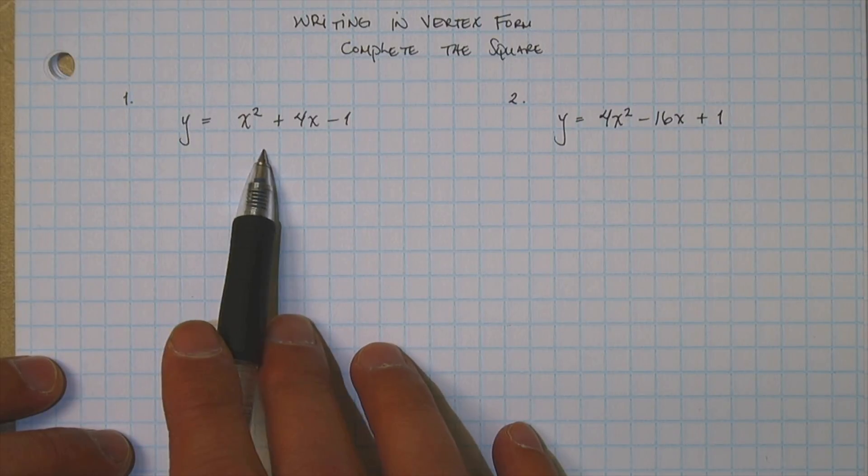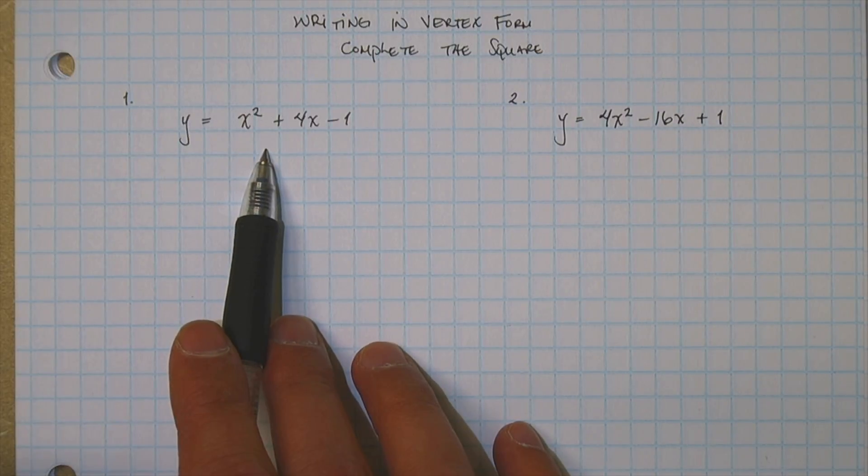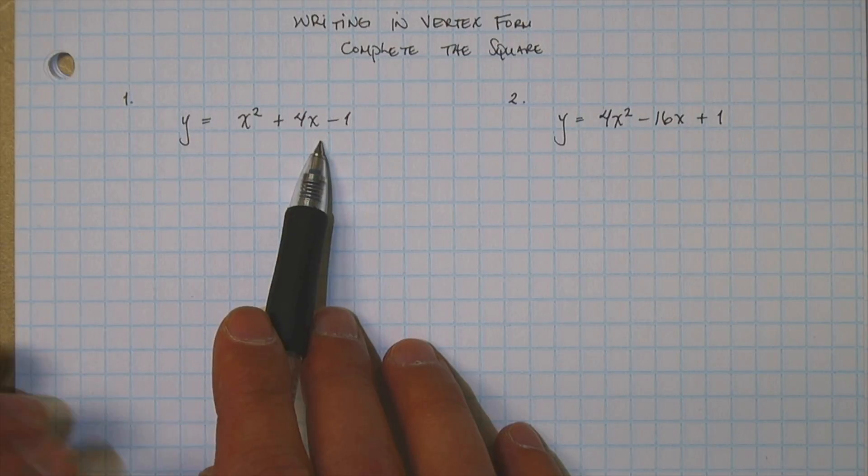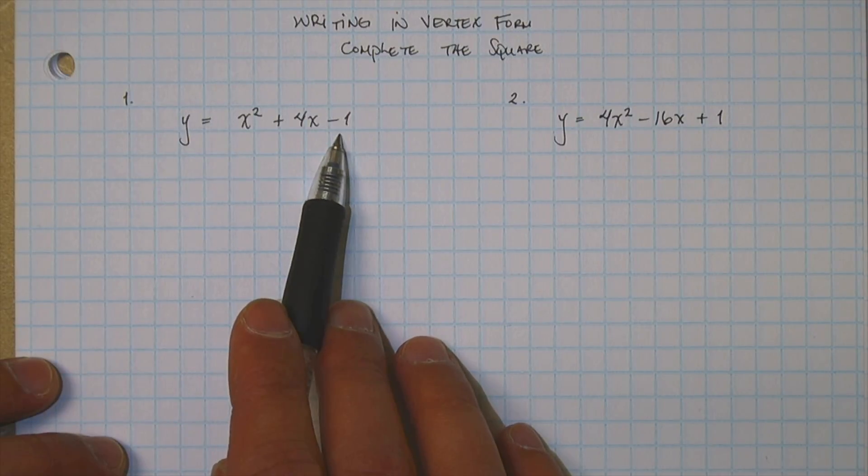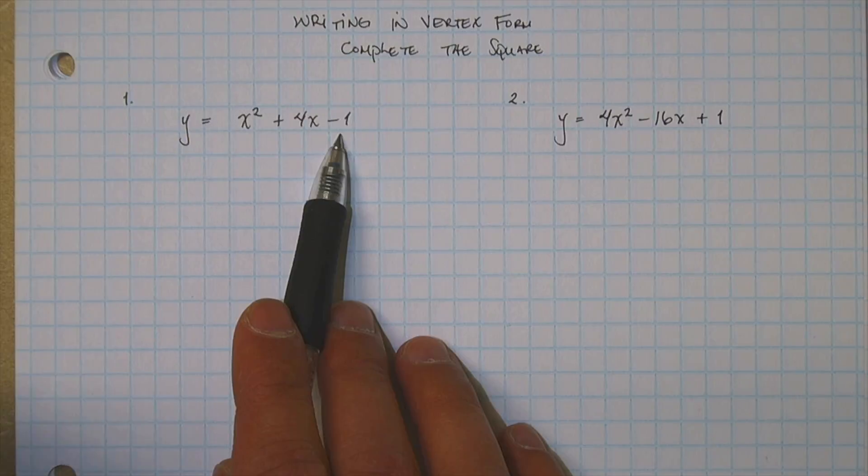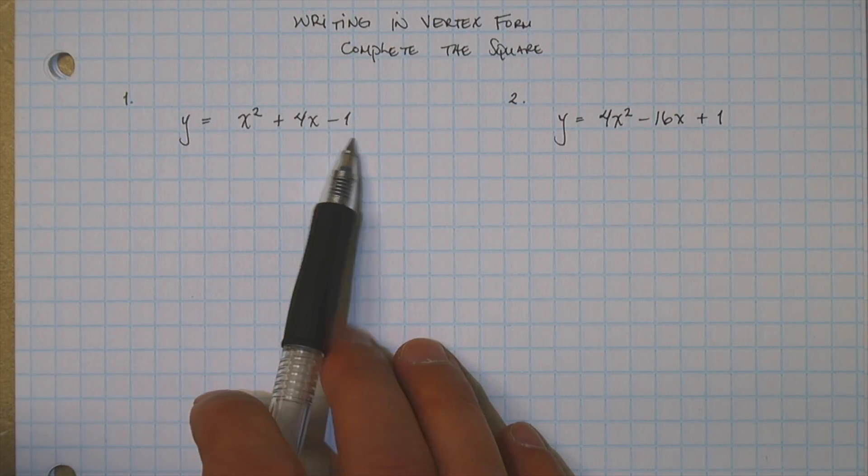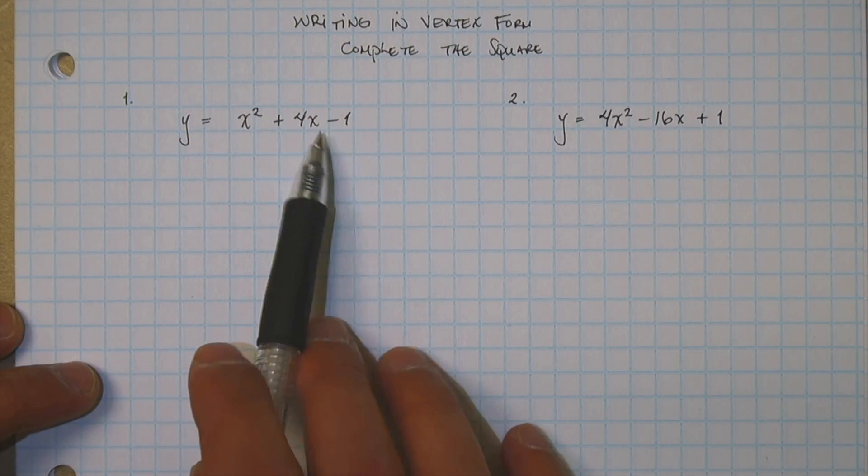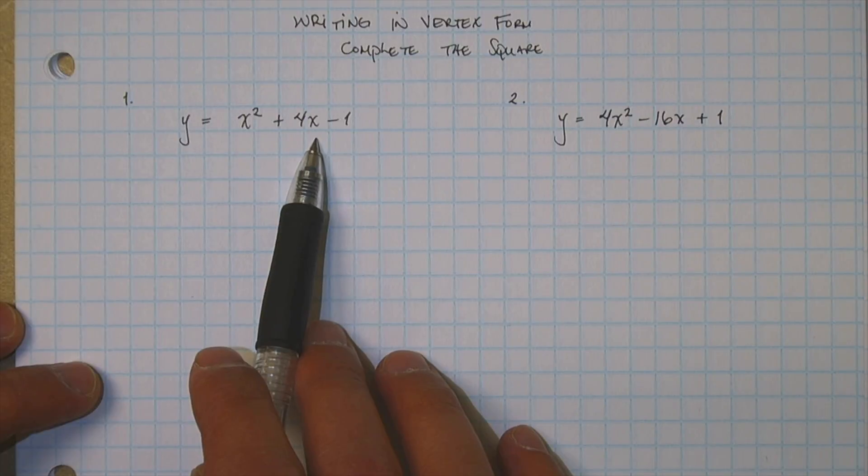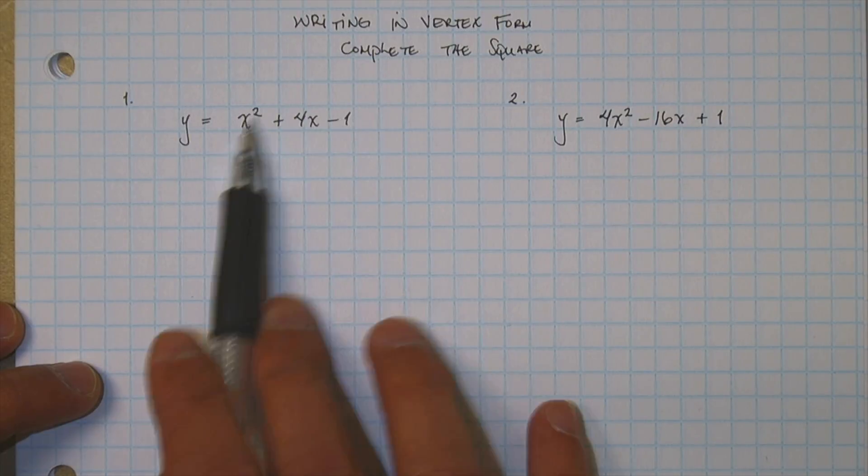Now normally here if we want to go ahead and graph that, the first thing we have to do is we have to factor it out. The problem is you're not going to be able to factor it out, so it's going to be making it difficult to graph. So what we do is we do something called completing the square, and this is very important for those of you going to universities in college algebra.